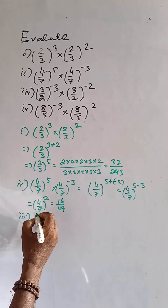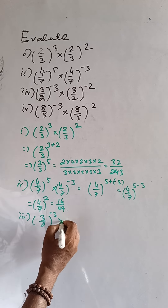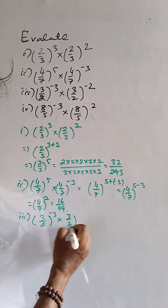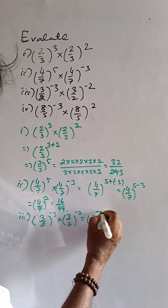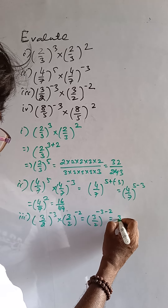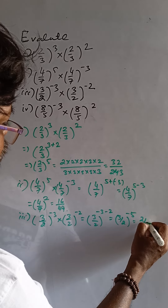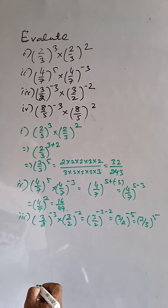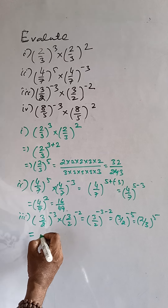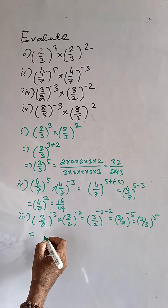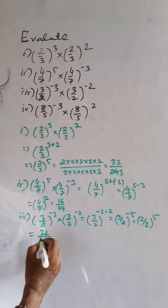Third part is 3 by 2 to the power minus 3 into 3 by 2 to the power minus 2. That is 3 by 2 whole to the power minus 5, which is 2 by 3 whole to the power 5. This is equal to 2 to the power 5, that is 32, and 3 to the power 5, that is 243.